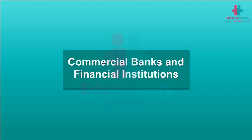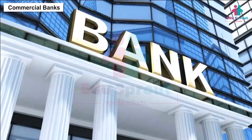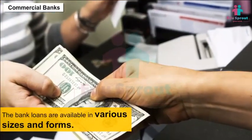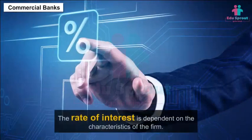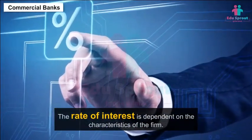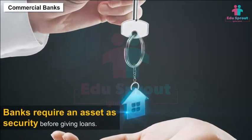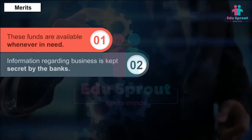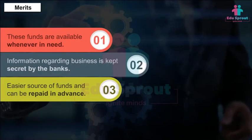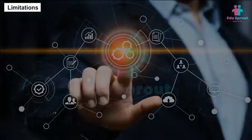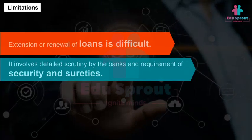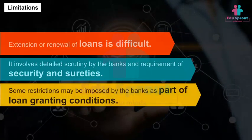Commercial Banks: Banks provide funds for different purposes of a business. Bank loans are available in various sizes and forms, and the rate of interest depends on the characteristics of the firm. Banks require an asset as security before giving loans. Merits: funds are available whenever needed, information regarding business is kept secret by banks, easier source of funds, and can be repaid in advance. Limitations: extension or renewal of loan is difficult, involves detailed scrutiny and requirement of security, and some restrictions may be imposed by banks as loan-granting conditions.